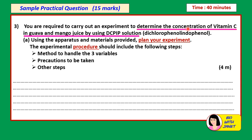You are required to carry out an experiment to determine the concentration of vitamin C in guava and mango juice by using DCPIP solution, which is dichlorophenol-indophenol. Using the apparatus and materials provided, plan your experiment. The experimental procedure should include methods to handle the three variables, precautions to be taken, and other steps — four marks in total.